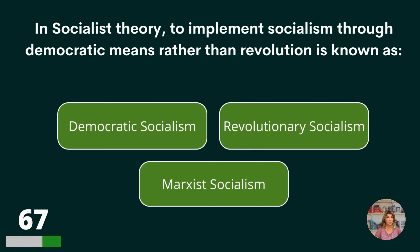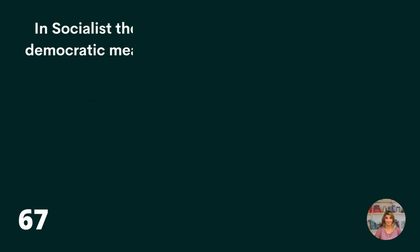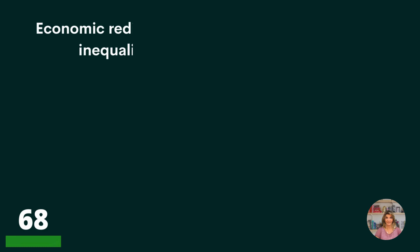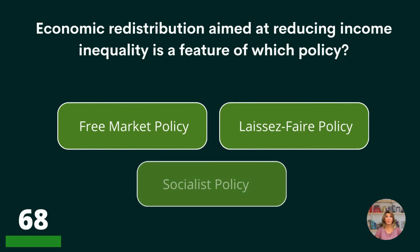In socialist theory, to implement socialism through democratic means rather than revolution is known as democratic socialism, revolutionary socialism, or Marxist socialism? Democratic socialism.